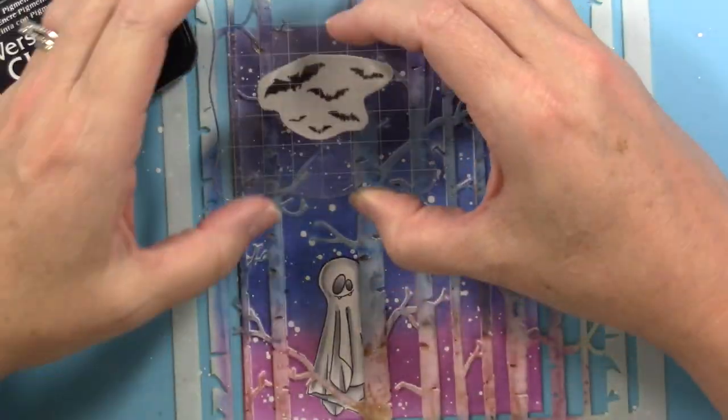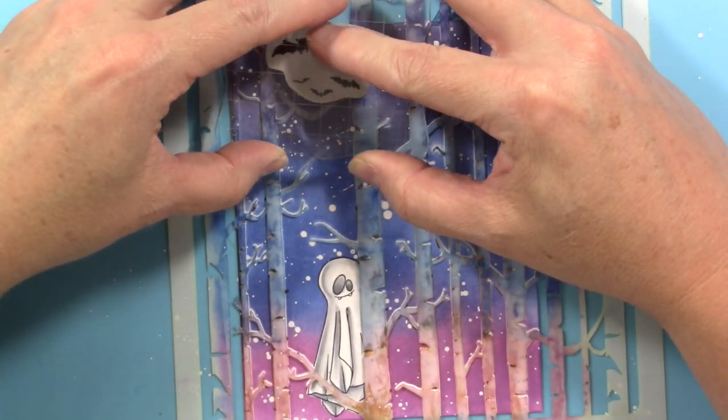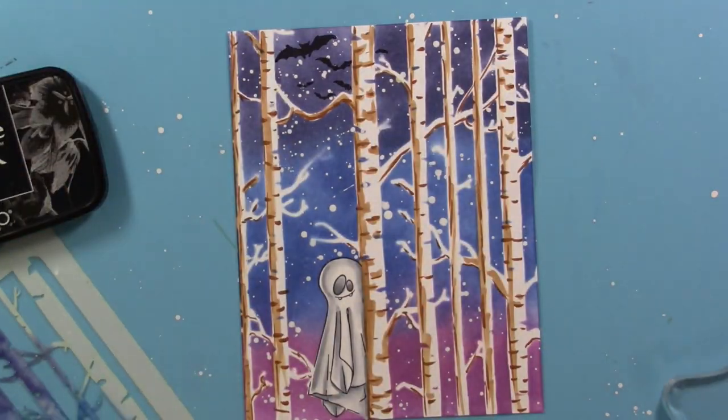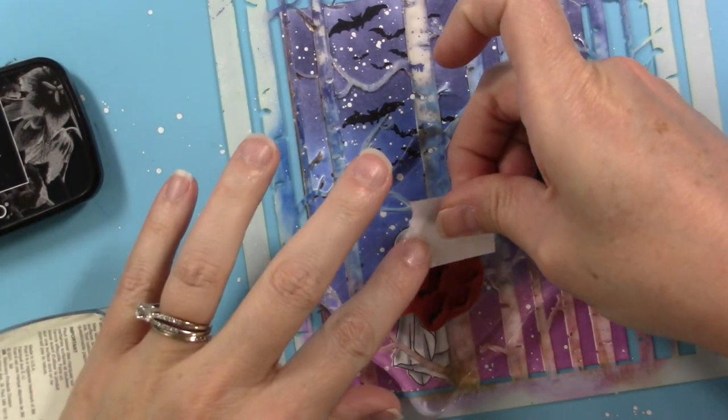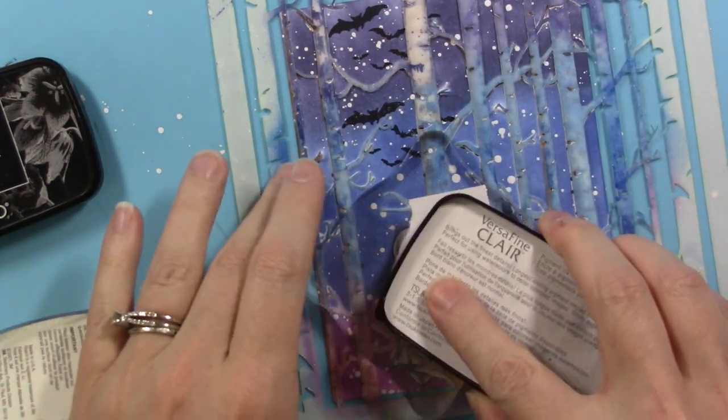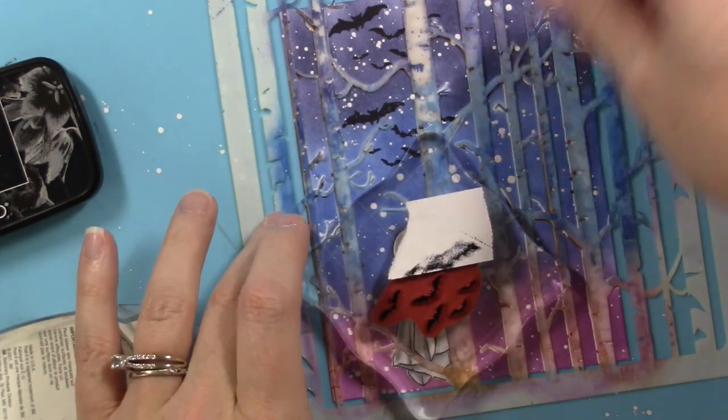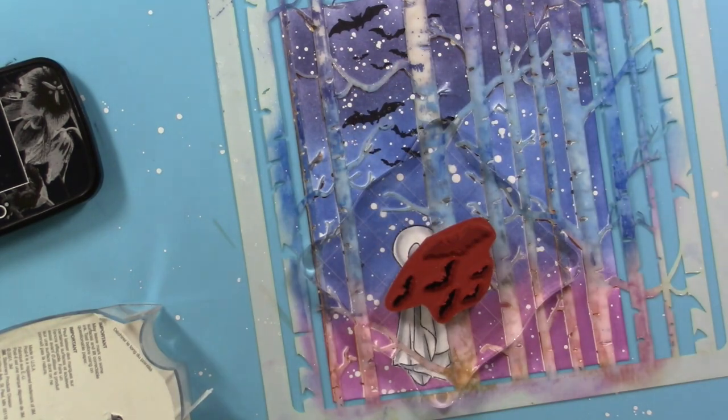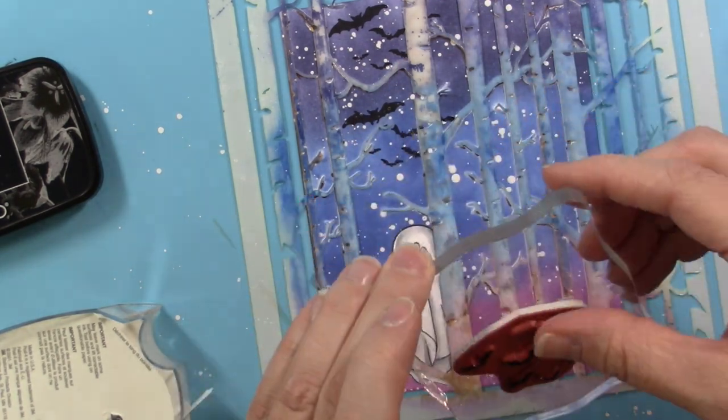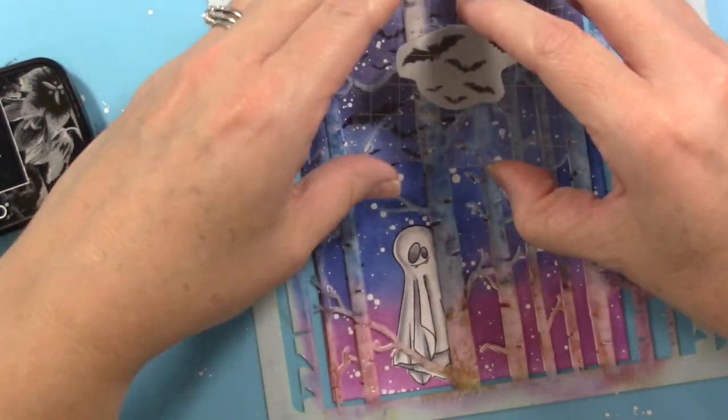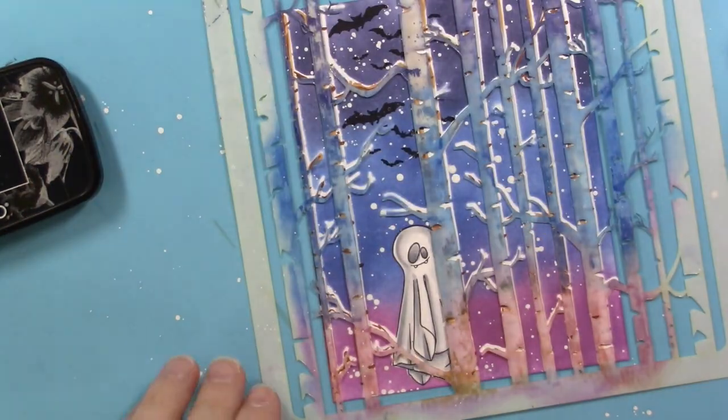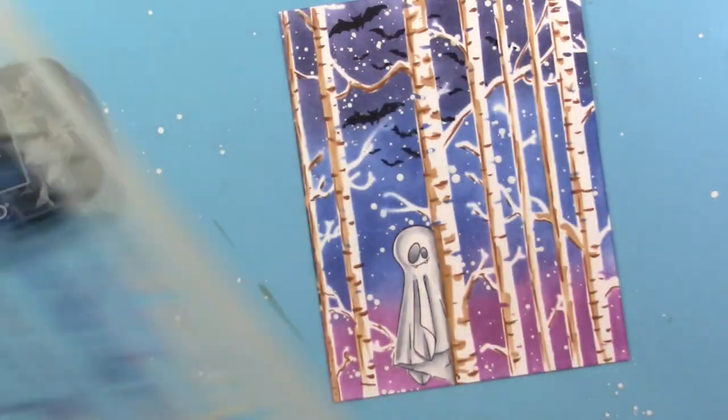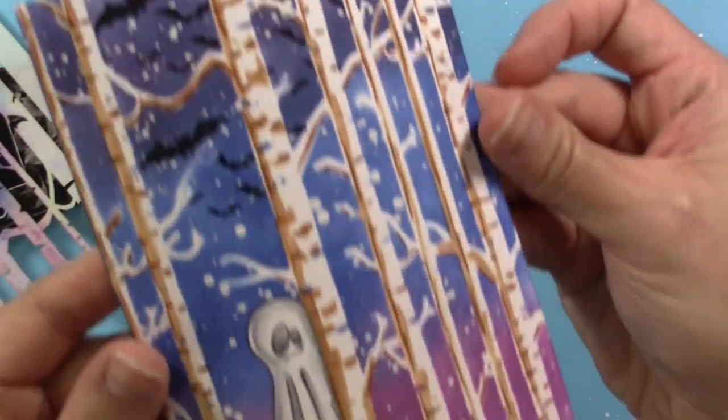I'm going to take another stamp from Sew Suzie, these little black bats, and I'm going to stamp those into the night sky using my Versifying Claire. Again I'm going to lay down the stencil so that I don't stamp them over the trees. Now I want to do another stamping of the bats but I don't want that large bat, so I mask it off, wipe off any excess ink from the previous stamping, and stamp that right over my stencil so that I get just the tiny bats so they look like they're in the background of the scene.